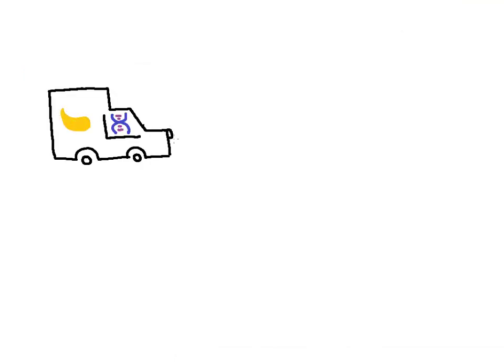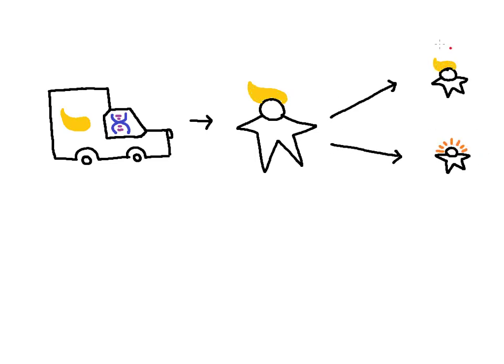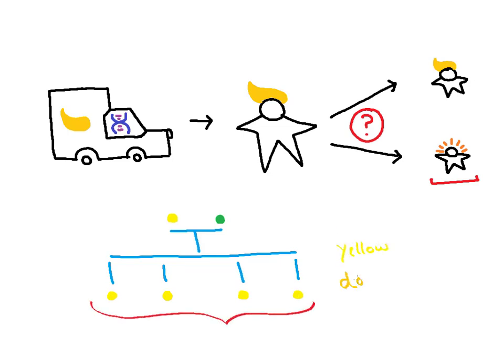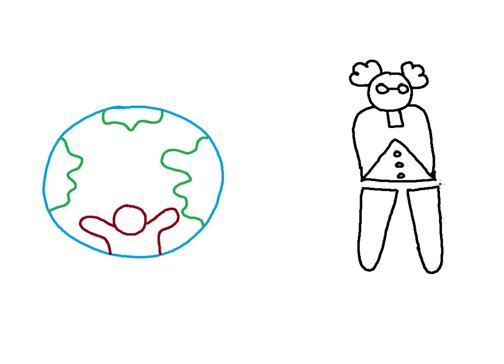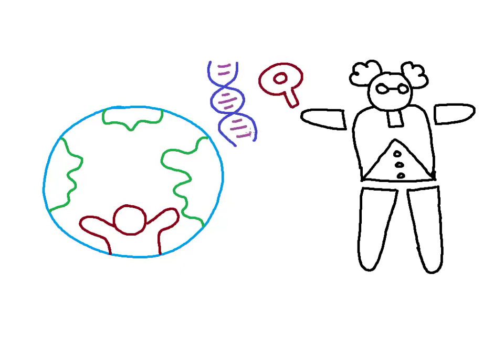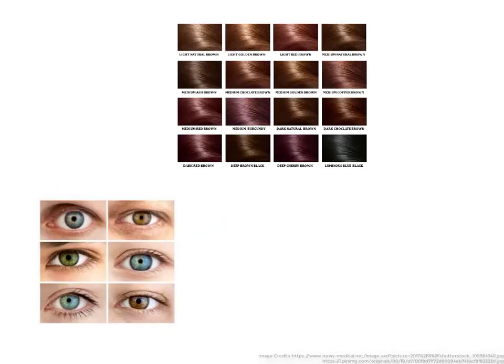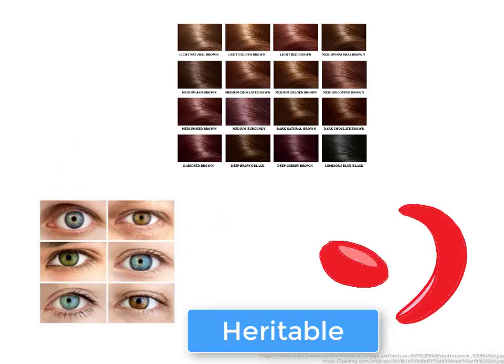As carriers of traits, genes might or might not be expressed and consequently traits might or might not show up in the organism. Just like Mendel's peas in the first generation had the gene for green color but yellow dominated and masked the green. This can happen due to various reasons, some of which we know and some we don't. And our environment can also affect the expression of these genes. These are intricate mechanisms and scientists are working hard to understand those. For instance, eye color, hair color, some diseases like sickle cell anemia are heritable. And there are some others whose inheritance we know very little about such as intelligence and emotions.